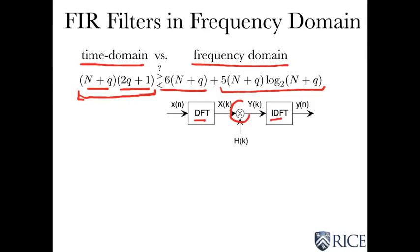I have two transforms I have to compute. They each have the same complexity because they have to be the same length. And so that's where 5 times n plus q log 2 of n plus q comes from. The 6 here, which is just proportional to n plus q, has to do with this multiply. This is a complex multiply. Spectra are complex valued. So you have an a plus jb times a c plus jd. And you have to multiply that out. That requires four real multiplies and two additions. And that's where this 6 comes from.